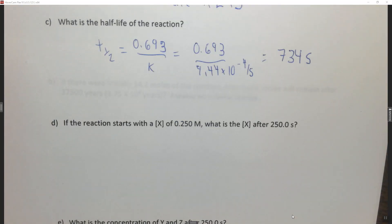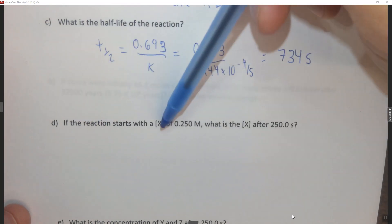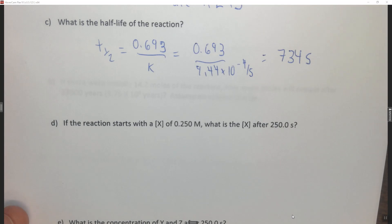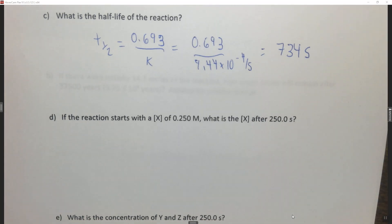If you haven't already watched the beginning of this video, it's a good idea to do that. For part D it says if the reaction starts with the concentration of x at 0.250 molar, what is the concentration of x after 250 seconds? So we already determined that this is a first-order reaction, and we know the integrated rate law for first-order reactions. The advantage of the integrated rate law is it allows us to determine the concentration of x after some amount of time.